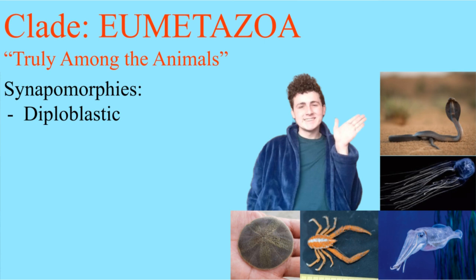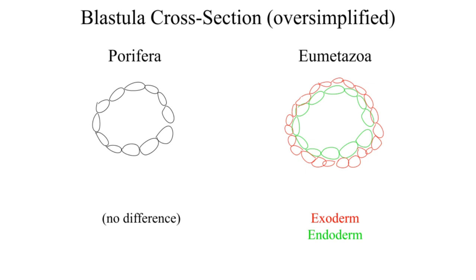Eumetazoans, on the other hand, have even more cell specialization. Specifically, they're what's called diploblastic, meaning double developmental cell. This means they have two germ layers, the endoderm and the exoderm. The two layers each specialize into their own specific tissues.